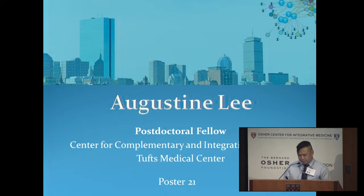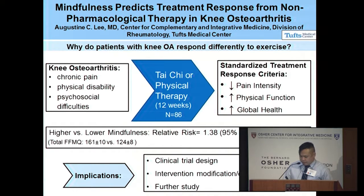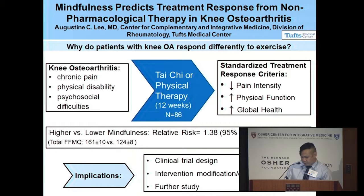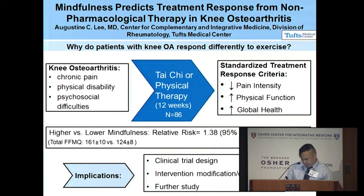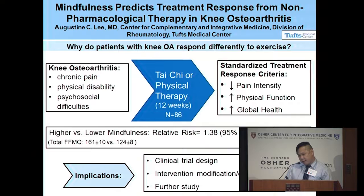Hello, I'm Augustine Lee, a fellow from Tufts Medical Center. Why do some patients with knee osteoarthritis respond to exercise treatment while others don't? Knee arthritis is a leading cause of chronic pain and disability, and current pharmacological options are not very effective and have morbid side effects, making exercise the first-line treatment. We examined whether baseline mindfulness could predict treatment response from exercise interventions. Participants completed the five-facet mindfulness questionnaire before and after a 12-week program of either Tai Chi or physical therapy. We found people with higher baseline mindfulness were almost 40% more likely to achieve treatment response. Mindfulness-cultivating interventions could serve as a preparative adjunct to increase effectiveness of exercise treatments.